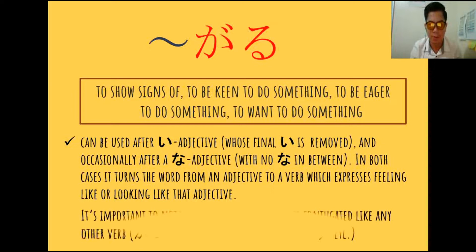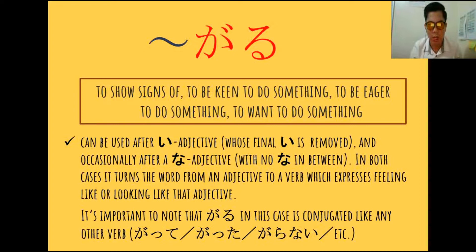It's important to note that Garu, in this case, is conjugated like any other verb. Ibig sabihin, si Garu is kinoconjugate din natin like a verb. Si Garu, or Garimasu, belongs to Group 1 or U-verbs. Ikukonjugate natin siya as Group 1.